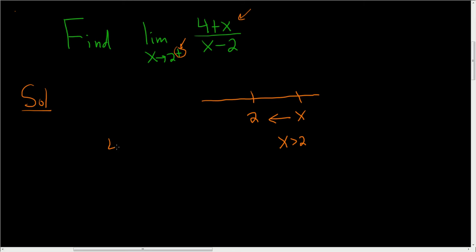What you can do is plug in a number really close to 2 but bigger than 2. For example, 2.01. Then here we'll have 2.01 minus 2, so this is 6.01 divided by 0.01. You'll see that no matter what number you plug in, the closer you get to 2, the smaller this will be on the bottom.